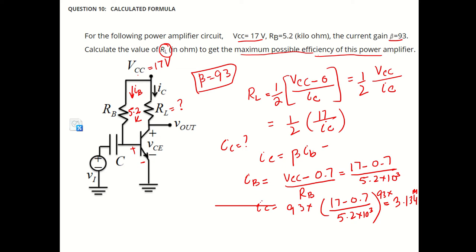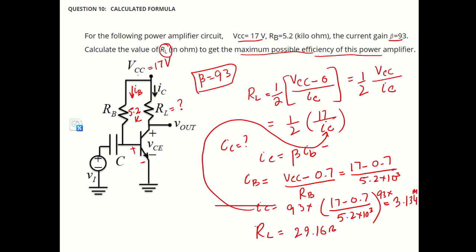Now, if you plug in this IC value into the RL formula, we will get the value of RL. Plugging in this number, the value of RL comes out to be 29.16 ohm. So that is the answer for this case.